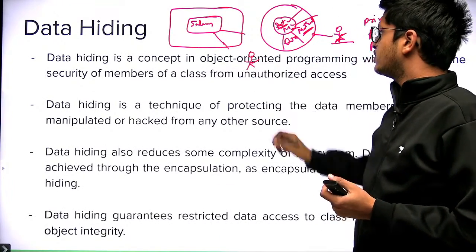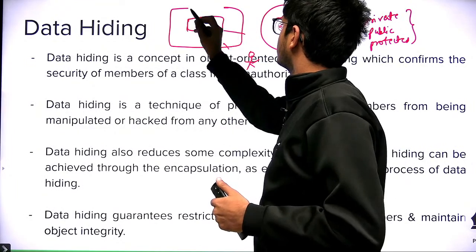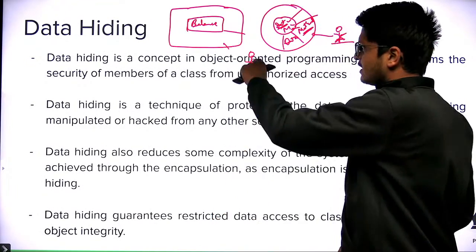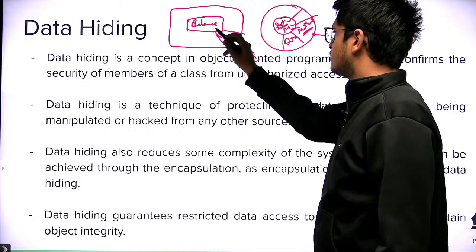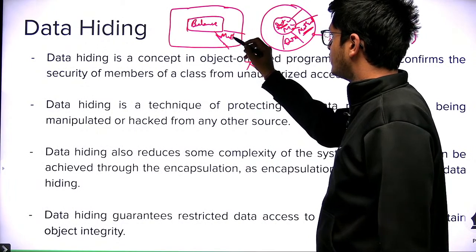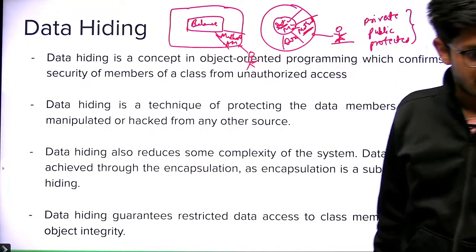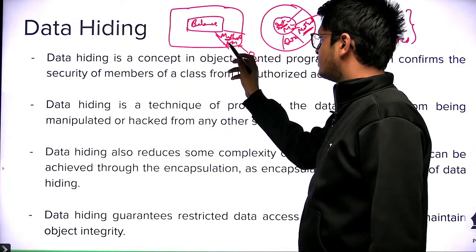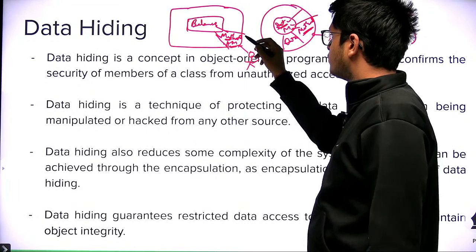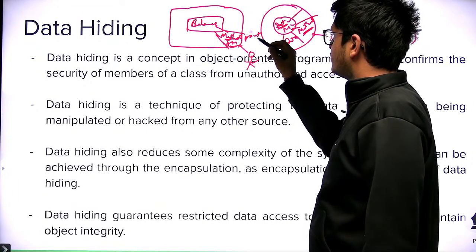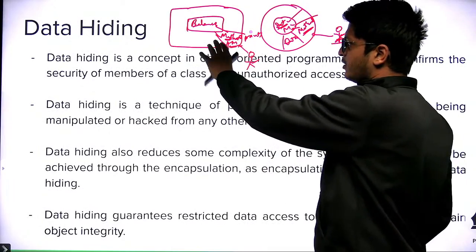What you can do instead is insert an ATM card into an ATM and ask for the balance, and you will get a receipt. The process of asking — this is a method inside the ATM. You just insert your ATM card and ask for the balance. The method which the ATM is running has access to your balance; you do not have direct access. It reads the balance and prints it into a receipt. This is an example of data hiding.